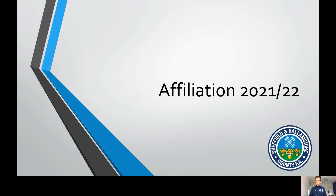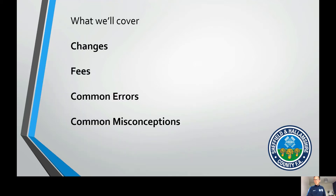So rather than running through all the steps step by step, we're just going to hit the key bits of information that we think you need around common errors, changes, and a few misconceptions around affiliation. That will hopefully speed up your affiliation and make it a really smooth process for everyone. So what we're going to cover: the changes, fees, common errors, and a few common misconceptions.